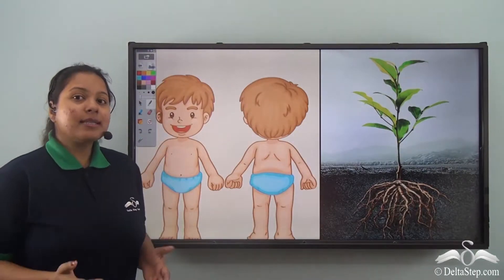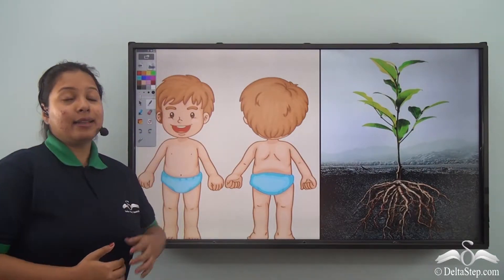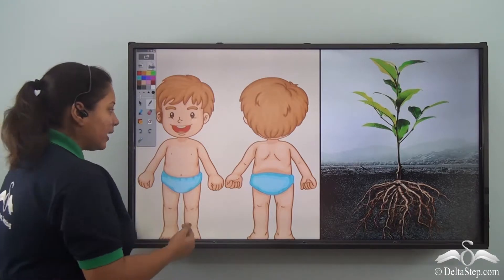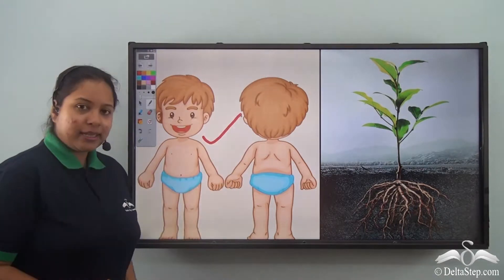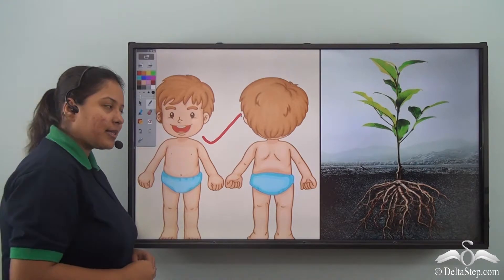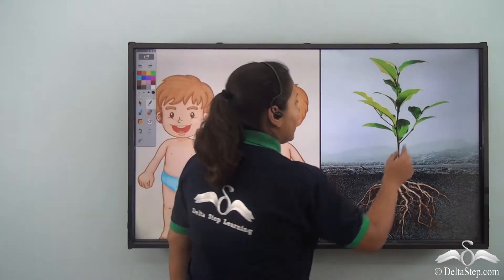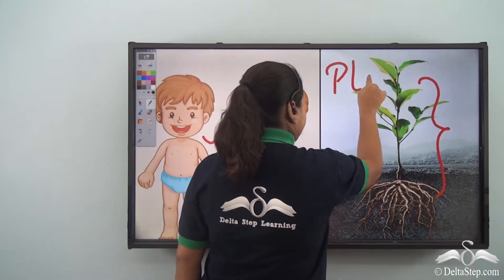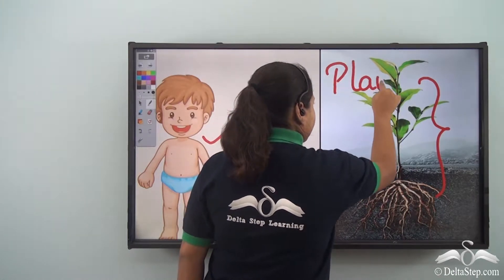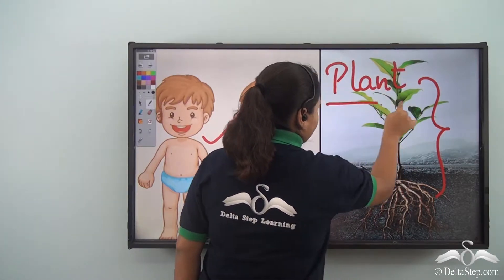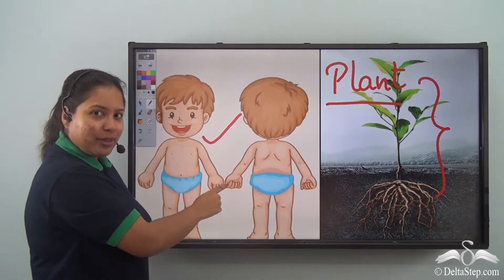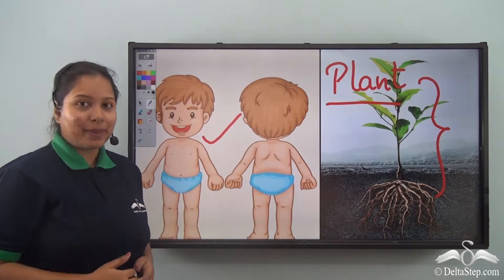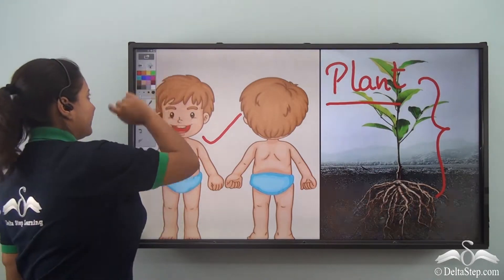Now, just like us, all other living beings also have their body. This is a human body and we have our body parts. Over here if you see, this is the body of a plant. It looks a bit different from us, isn't it? So, excited to know the body parts of the plant? Let's go for it.